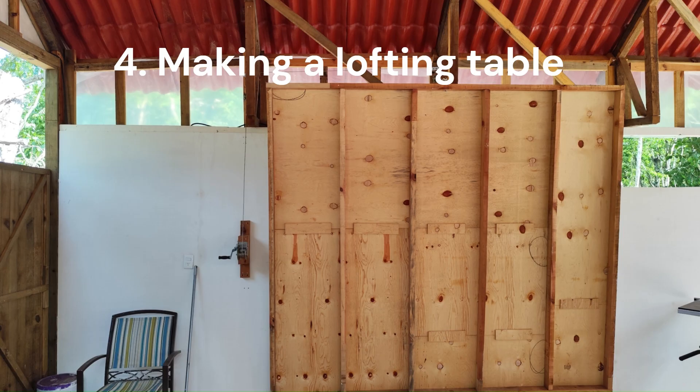Four, making a lofting table. Usually, the professionals build a full-size lofting table. Many private builders don't have that space, so they instead build a lofting table big enough for the stations. Let's say 3 by 3 meters, 10 by 10 feet, or suitable for the boat they want to build.